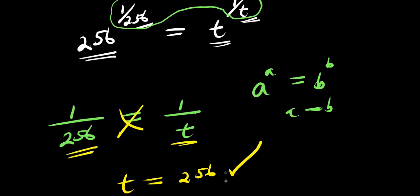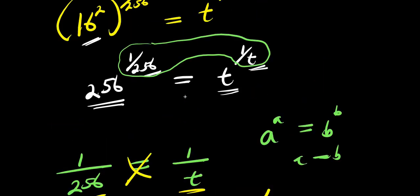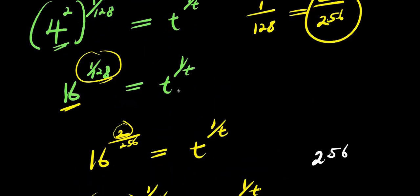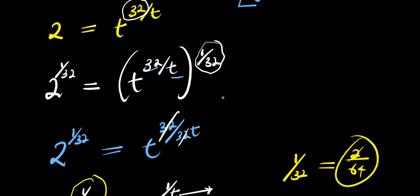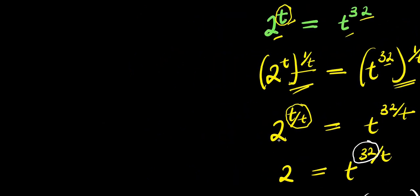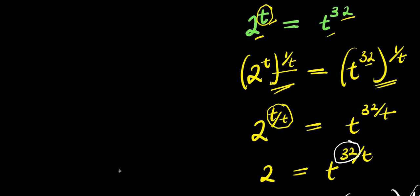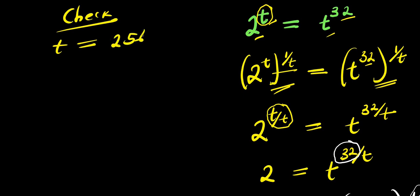So at this point I can decide to cross-multiply: t can multiply 1, that is t, and 256 can multiply 1, that is 256. So our answer is t equals 256. The next step will be to insert that particular value of t into this equation to check if we get the same thing on both sides. I recopy the problem: 2 to the power of t equals t to the power of 32.